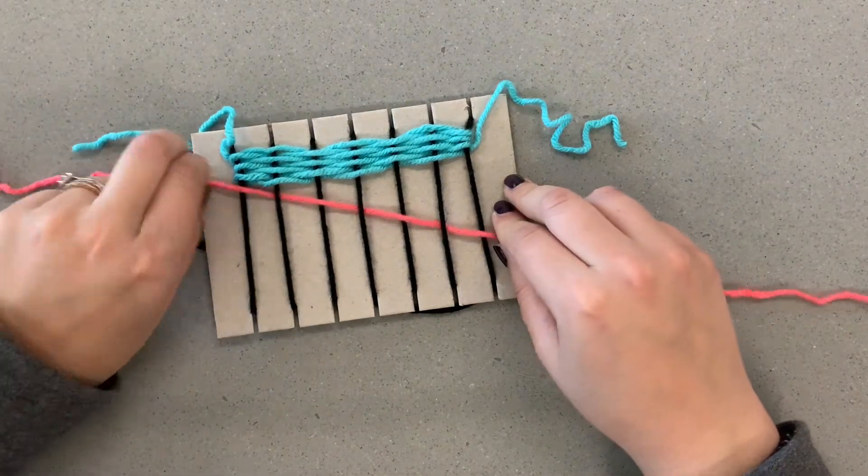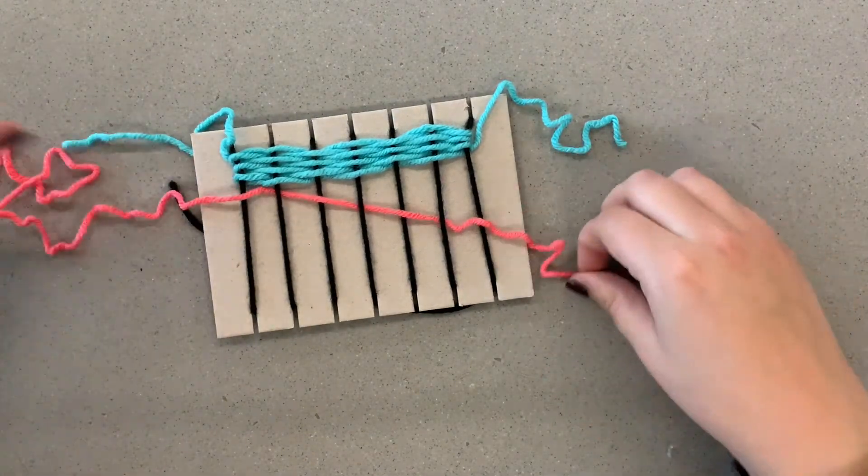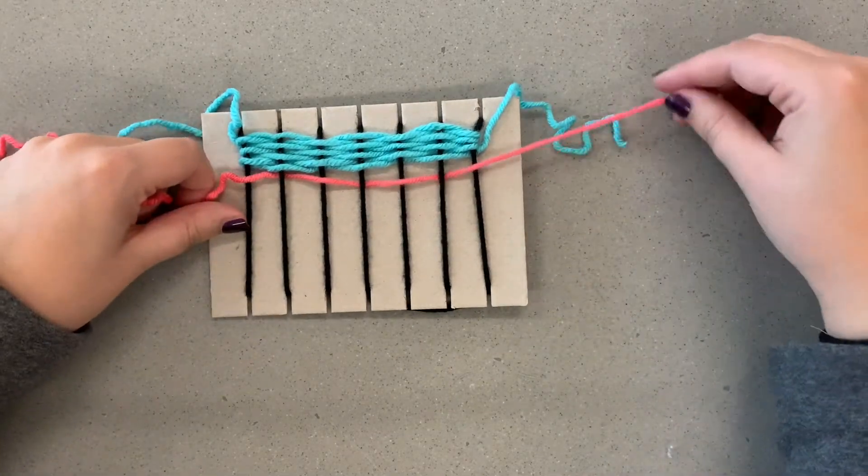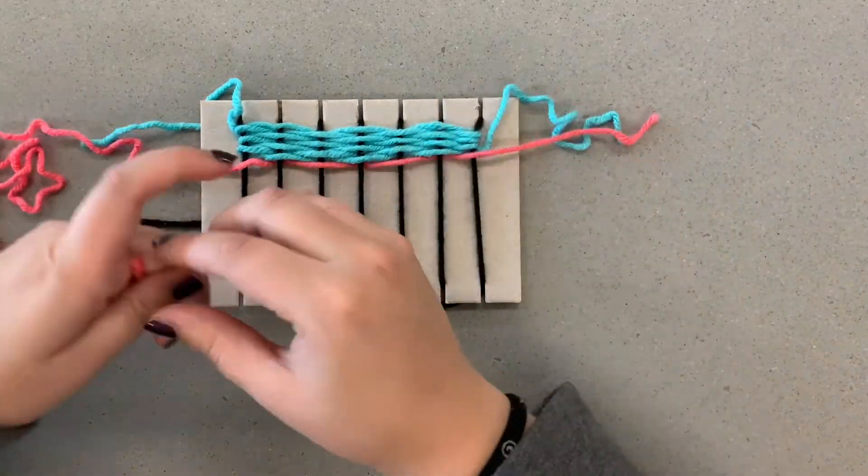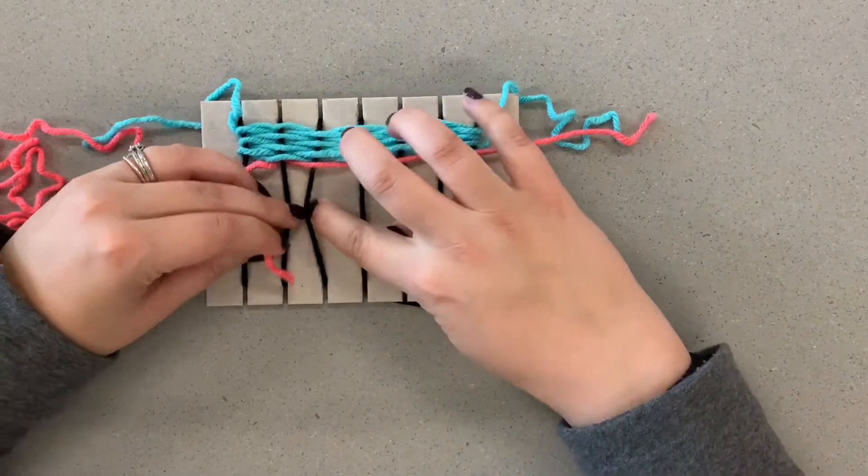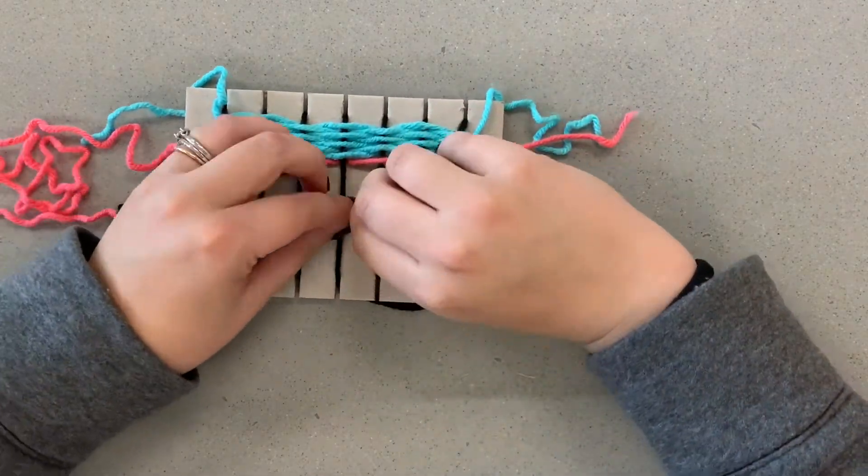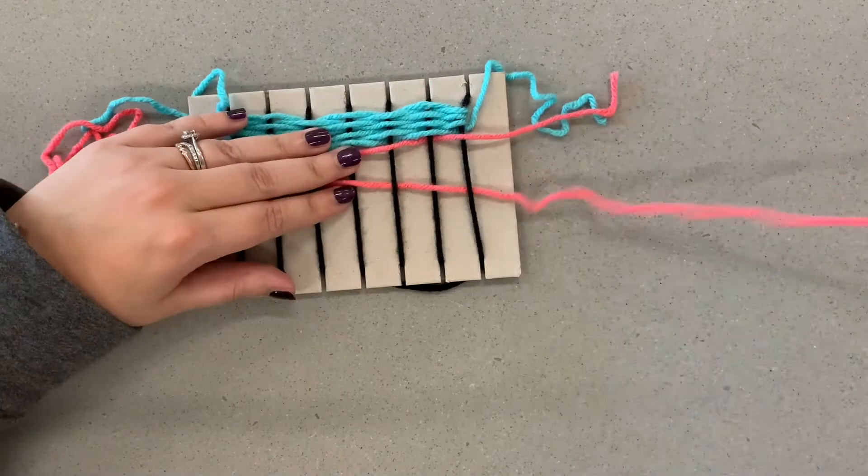So I'm going to pull that all the way through again, leave a tail about the same length. Make sure you keep scooting your weaving up so that it stays tight towards the top, but again make sure you don't pull too tight on the end because then you'll have a lot of trouble later.